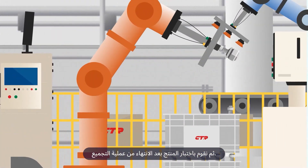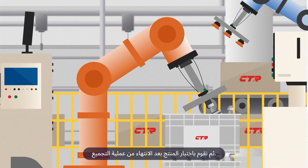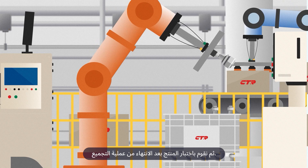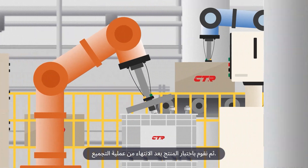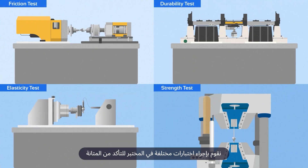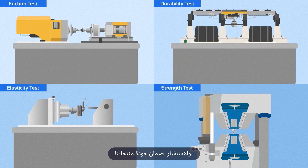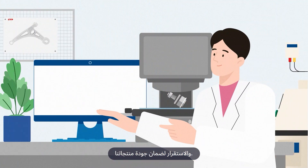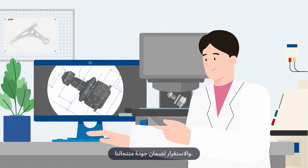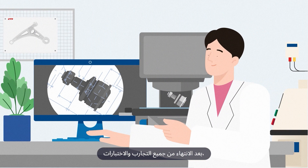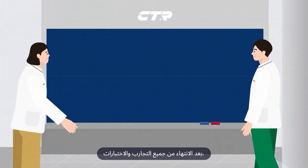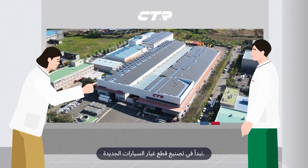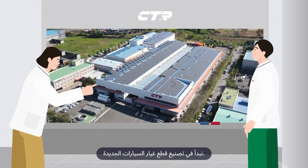After the assembly tryout is completed, the product is tested in the laboratory. We conduct various tests for durability and stability to ensure the quality of our products. Once all experiments and tests are completed, we start manufacturing the new auto parts.